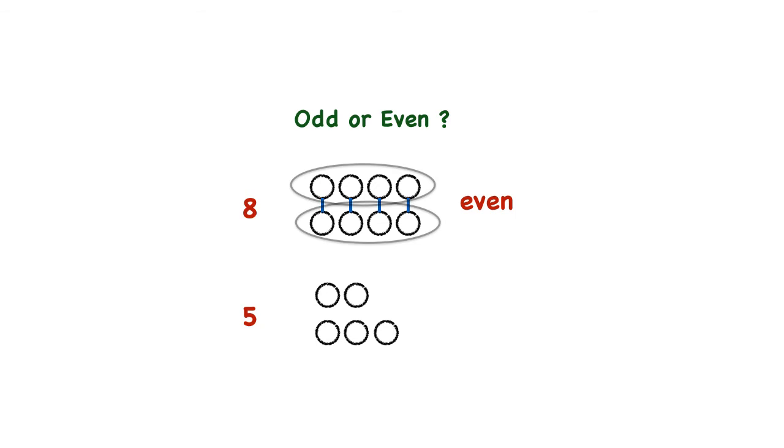Okay, if we try to make pairs with each of these circles, you can see that one circle is not part of a pair. And if we try to make two equal groups, we can't do it. So this means that the number five is odd.